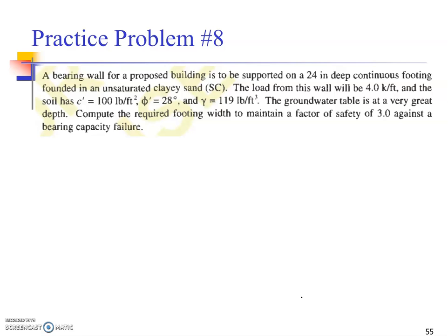Moving forward to the next problem. A bearing wall for a proposed building is to be supported on a 24-inch deep continuous footing founded in an unsaturated clay-sand. The load from this wall will be four kilopounds per foot, which is a linear load, a line load. It's a strip foundation, by the way.